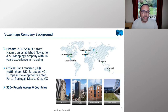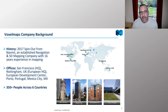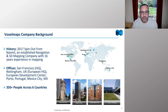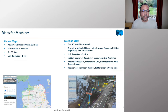We spun out of Navme and are headquartered in San Francisco, with offices in Latin America and Mexico City, the UK and Nottingham, Porto in Portugal, and Singapore and Australia as well. We're about 350 people and in quite a big growth phase. The majority of our focus is very much on the US and North America, and we'll be giving you great examples of the work we're doing.